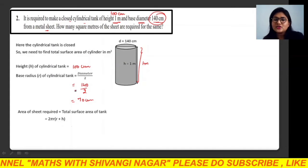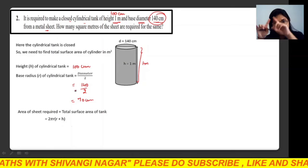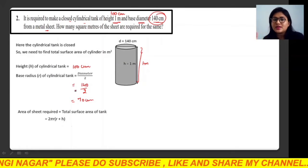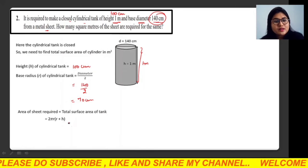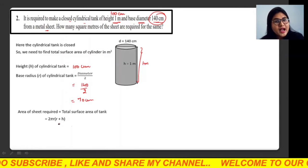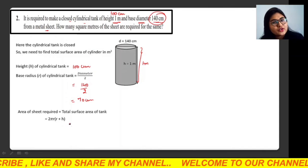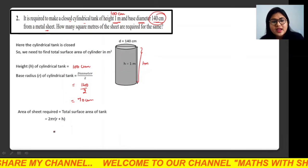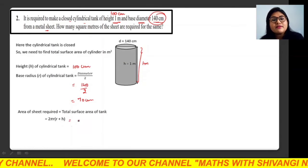So here you want what? The total surface area of the cylindrical shaped tank. So what is the formula? The formula is 2πr(r+h). These are all things you need. r you have, h you have. Now just put the values.